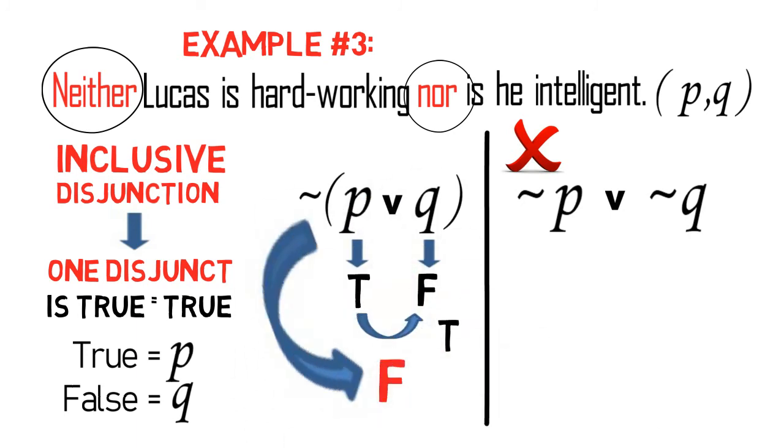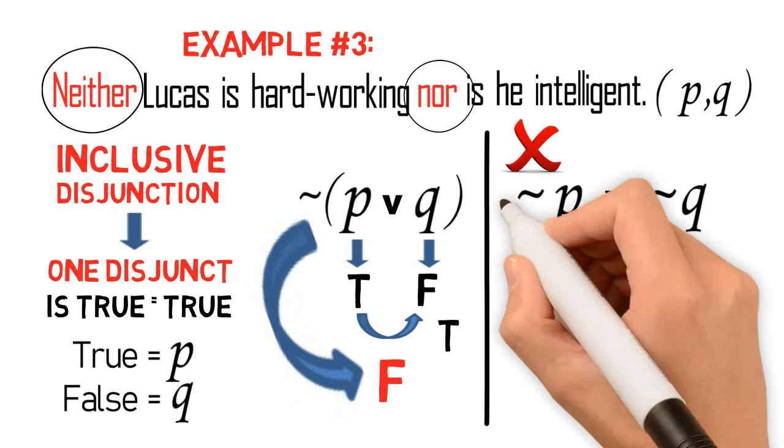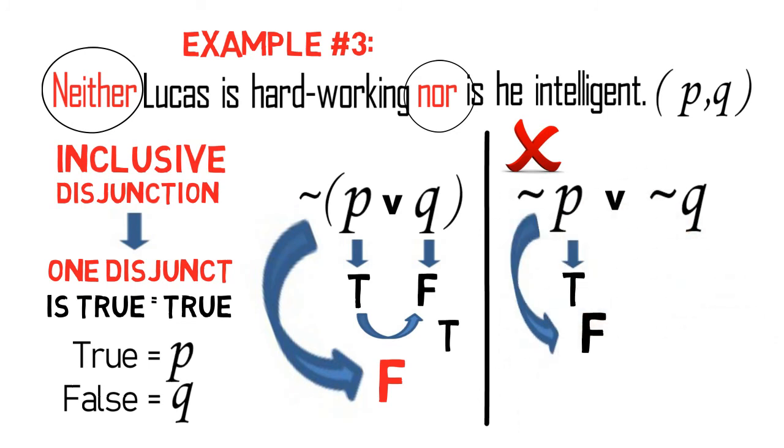However, in the symbol ~P v ~Q, both disjuncts are negated but not the entire proposition. So that if P is true, then ~P is false. And if Q is false, then ~Q is true. Thus, the symbol ~P v ~Q is true.